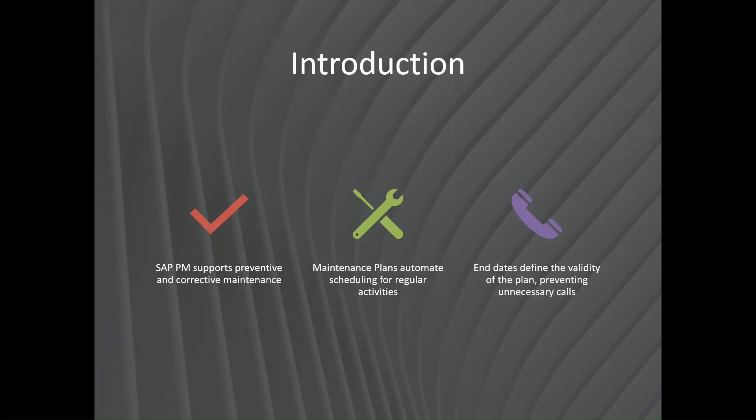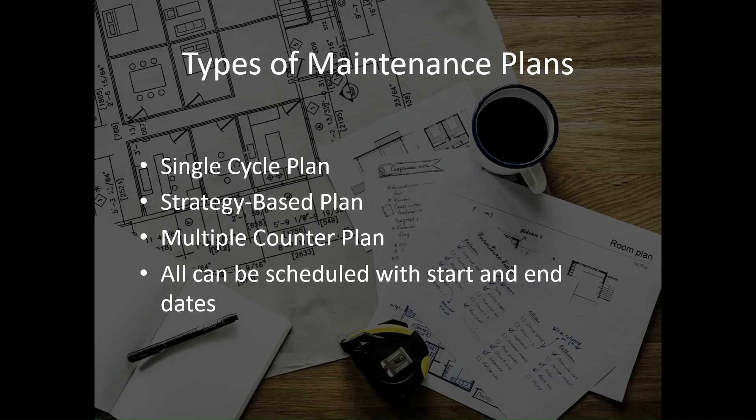There are multiple types of maintenance plans: single cycle plan, strategy-based plan, and multiple counter plan — all of which can be scheduled with start and end dates. In a single cycle plan, maintenance is done once and not repeated. In a strategy-based plan, maintenance is activated based on the outcome of some other activity, such as condition monitoring. In a multiple counter plan, maintenance is performed repeatedly after a certain due time.